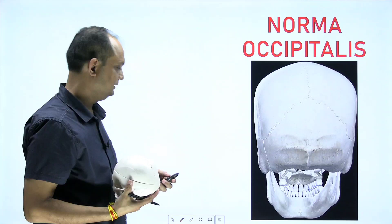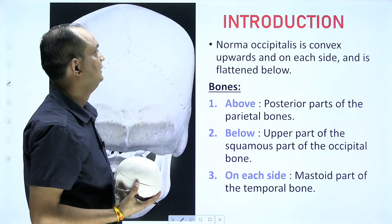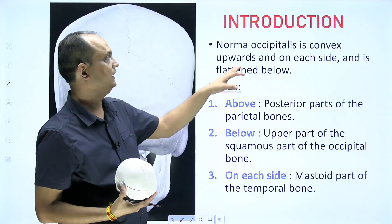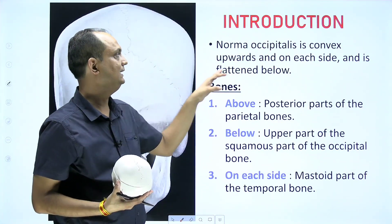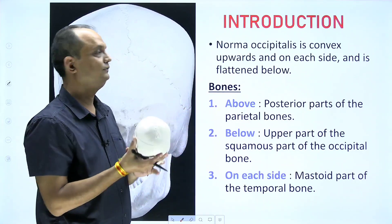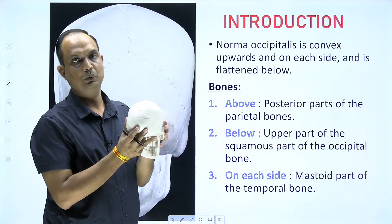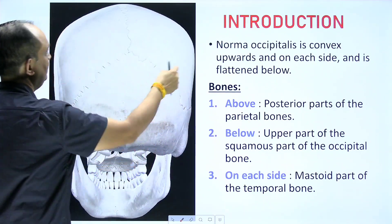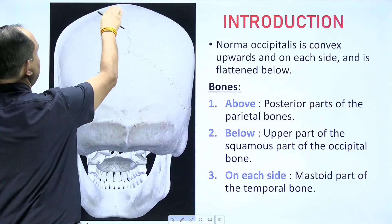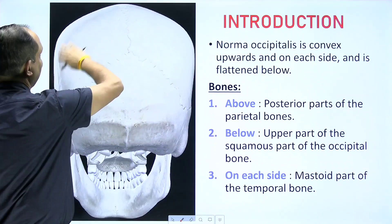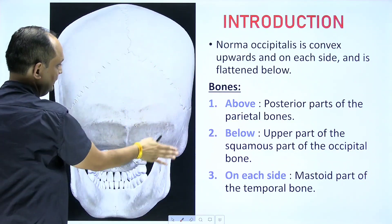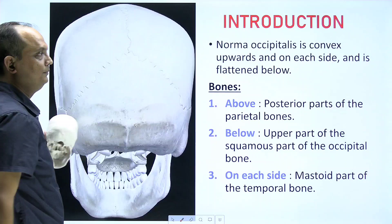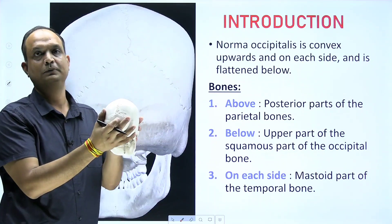The important thing to know about norma occipitalis is that it is convex upward and on each side, and it is flattened below. When you see it from the posterior side, you will find it has a convexity, but as you go downward it becomes flat.